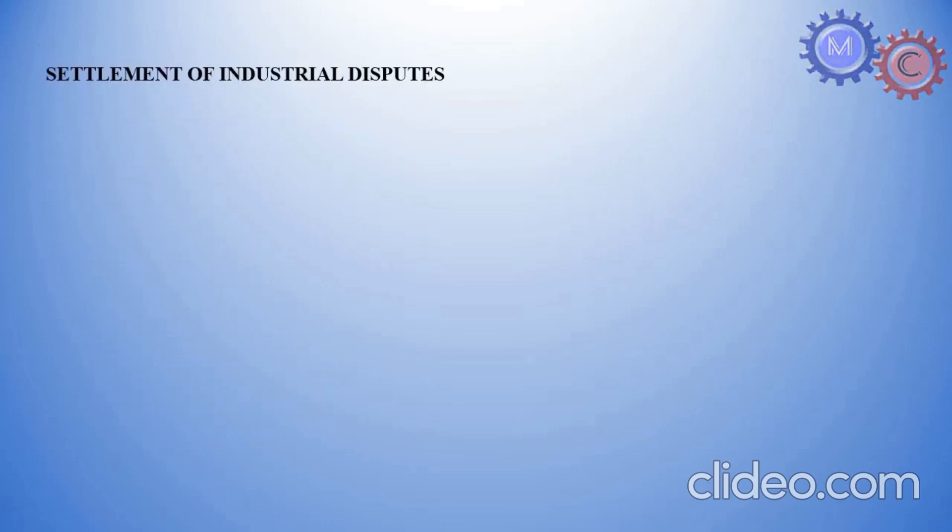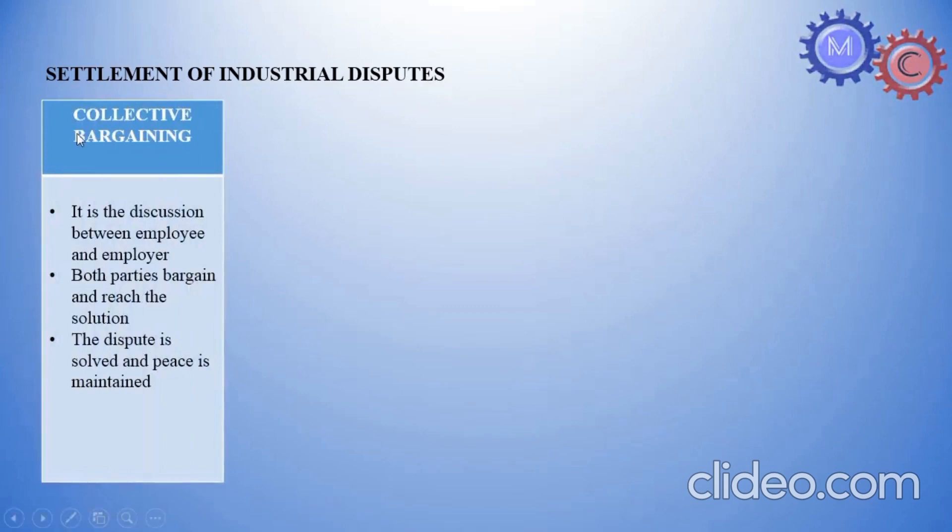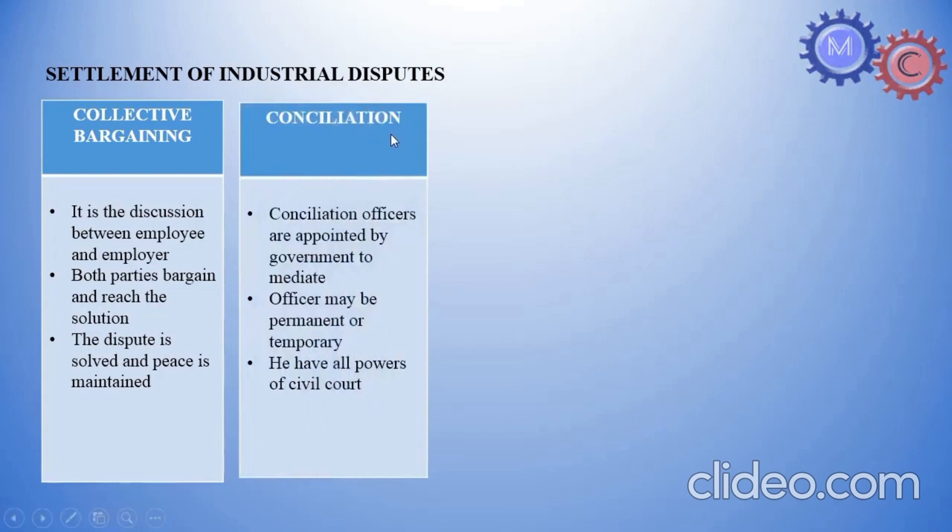Settlement of industrial disputes. Collective bargaining. Both parties bargain and reach the solution. The dispute is solved and peace is maintained. This is simple, first method. Next, conciliation. Government appoints conciliation officers to mediate. Officer may be permanent or temporary. He has all powers of civil court.